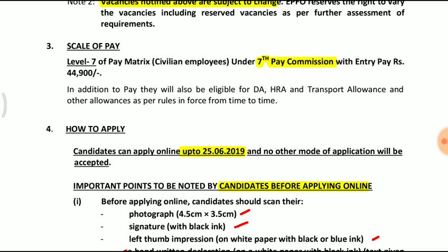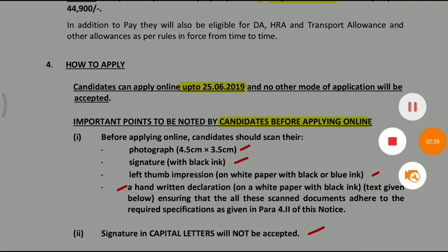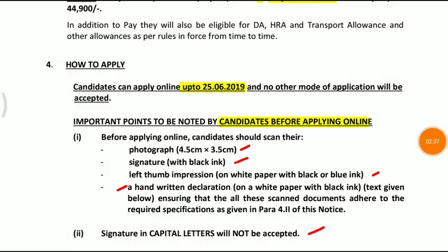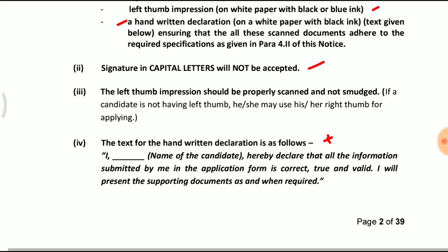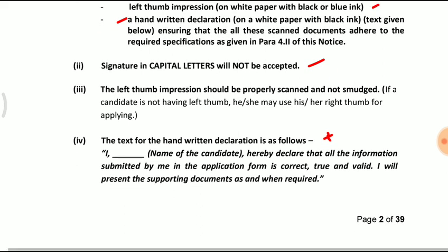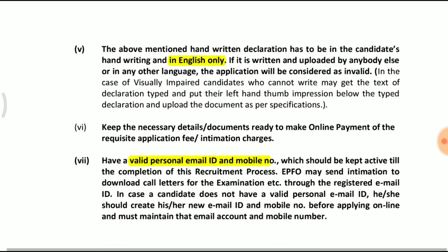You can start applying. Upload your photo. You can compress the signature and left thumb impression. Then, provide a hand-written declaration. Use a soft copy. Put the name of the candidate and write with blue or black ink on white paper. Scan and upload. The declaration must be written in English.